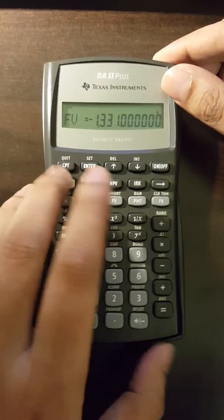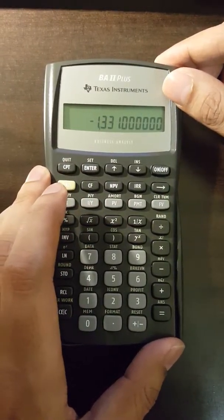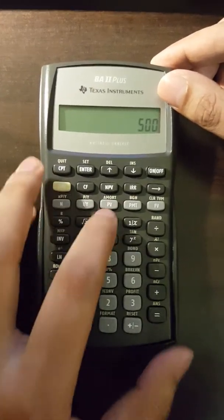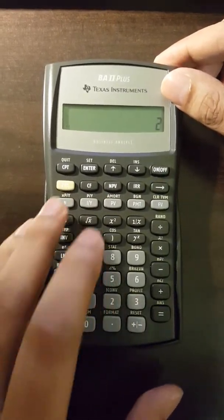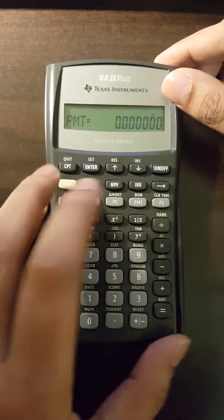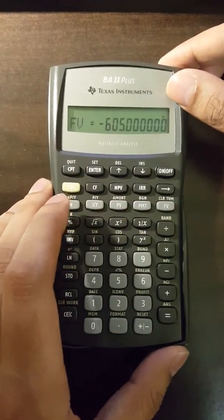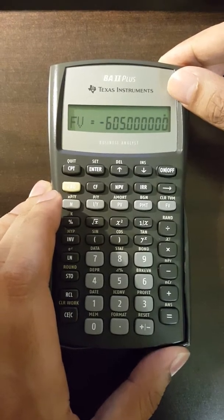For CF2, we'll clear the TVM registers again. PV or present value is 500. I by Y is 10. N is 2. PMT is 0. We compute the future value. We get $605. This will be positive.